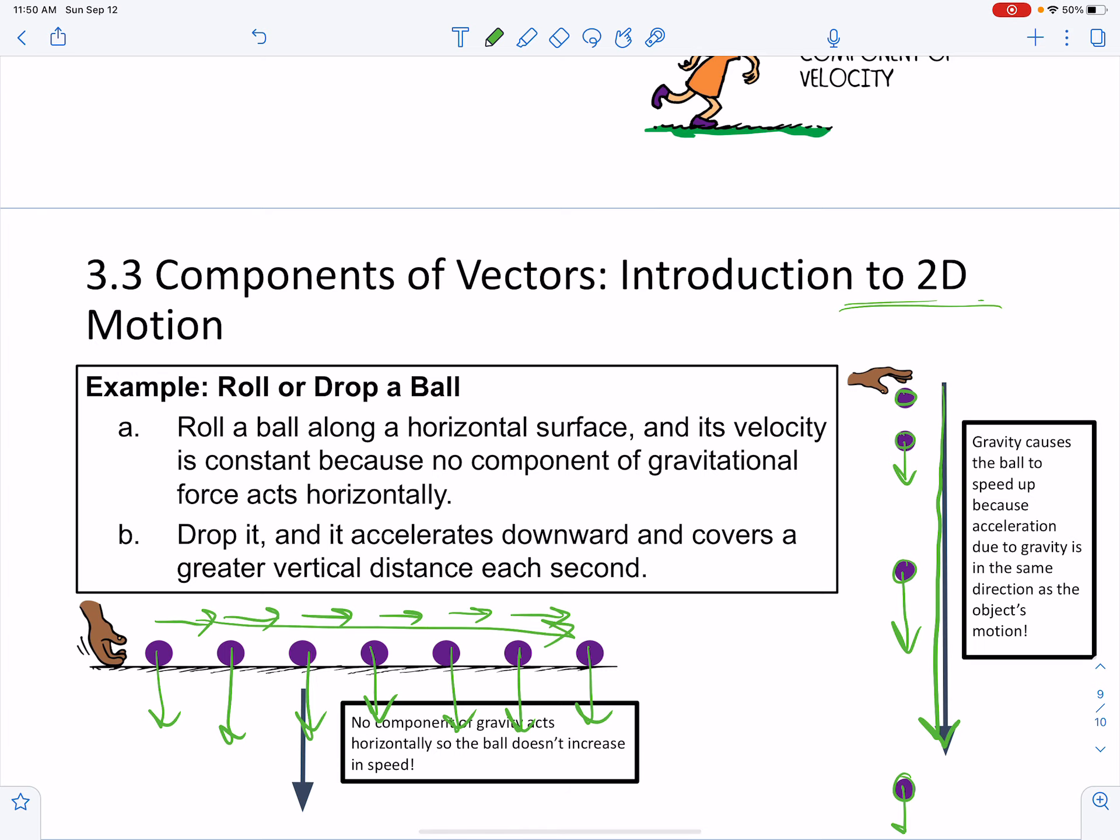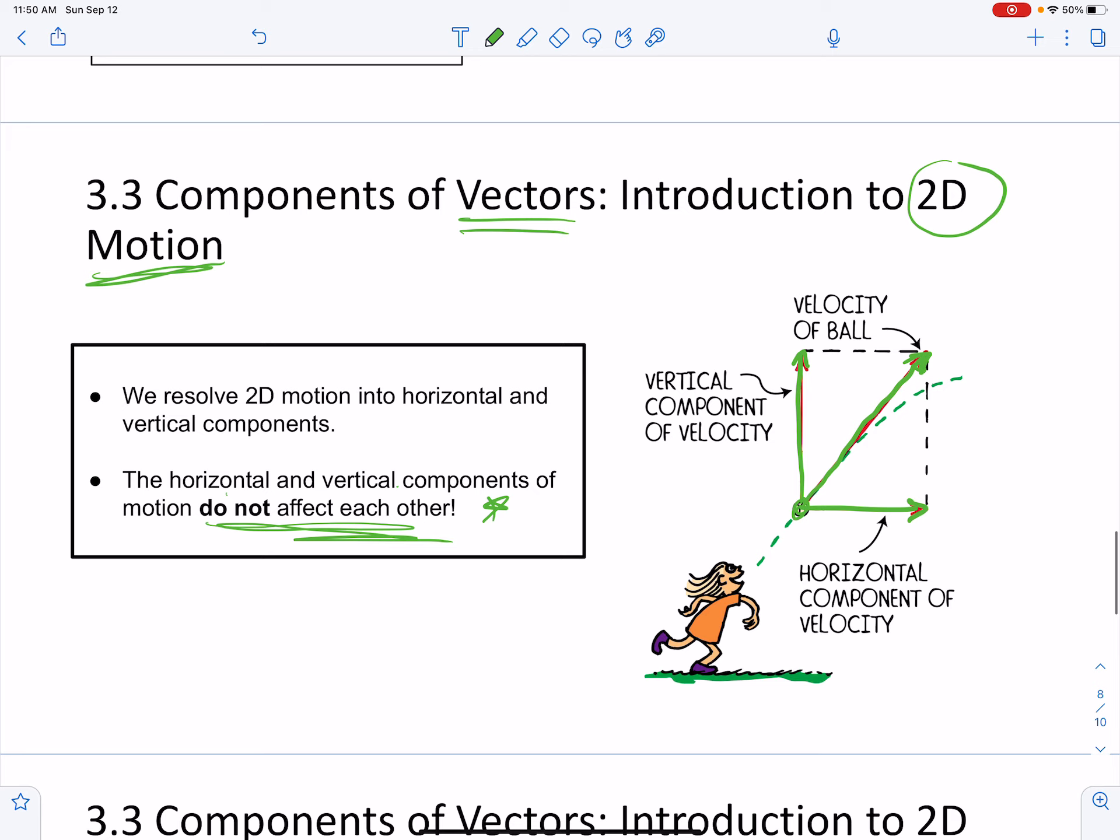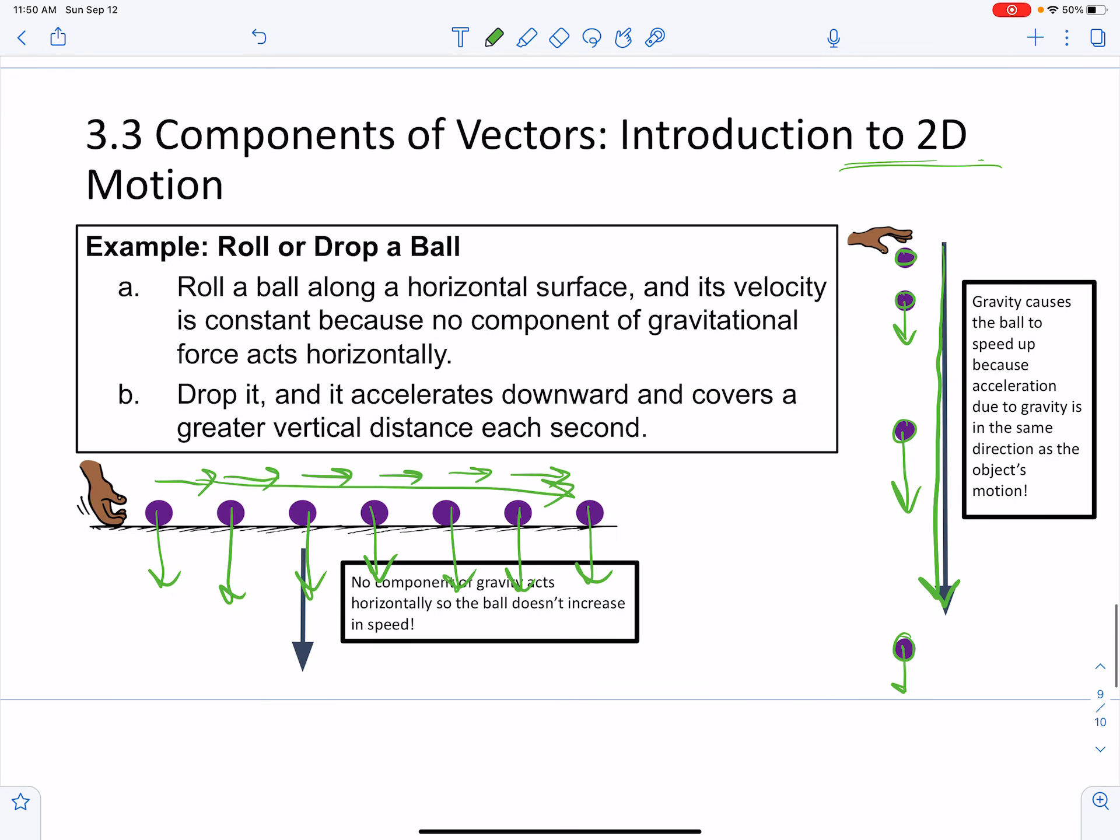So, two-dimensional motion, we have a vertical component, horizontal component, completely separate. All right. All right. That's it for now. We'll see you guys next time.